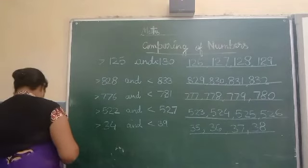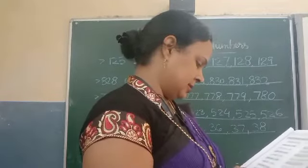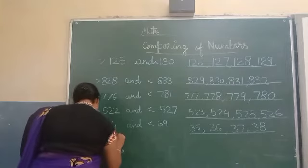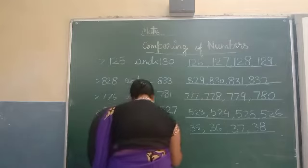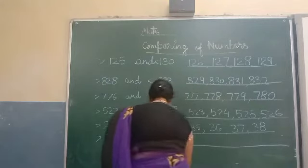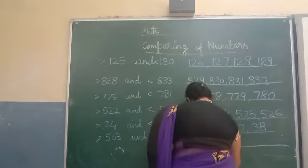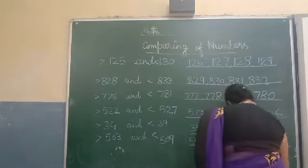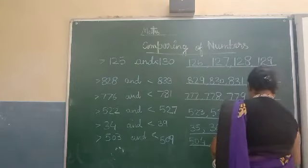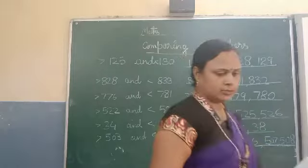In the same way, you can write the numbers. Next, 503 — all of you fill your book. Write 504, 505, 506, 507, and 508.